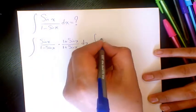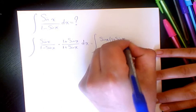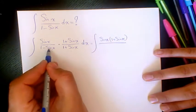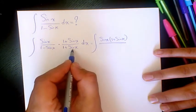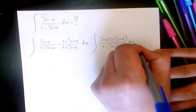Then you multiply it, it's going to be sine x times 1 plus sine x. And here, 1 minus sine times 1 plus sine is going to be the difference of squares, which is going to be 1 minus sine squared x dx.